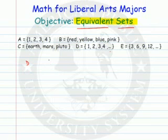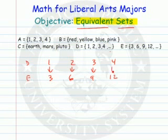So D is 1, 2, 3, 4, and so on. E is 3, 6, 9, 12. I can match 1 to 3, 2 to 6, 3 to 9, 4 to 12.